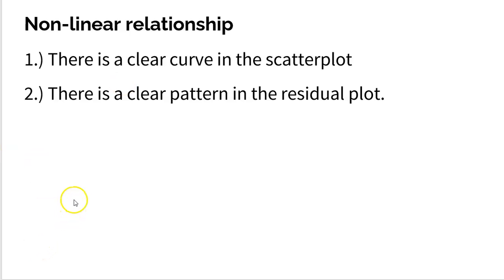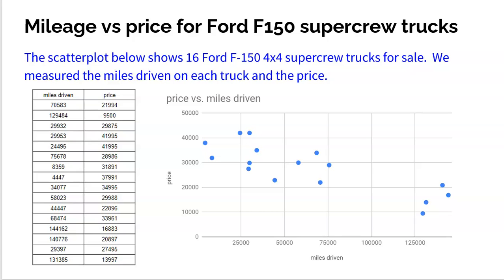So to make sure we really hammer this point home, let's look at an example. In this example, we looked at 16 Ford F-150 trucks. And we looked at the mileage on the truck and the price of the truck. And in this scatterplot, we see a pretty clear negative relationship, somewhat linear. And it shows us that as the mileage on the truck goes up, the price drops. Makes complete sense.